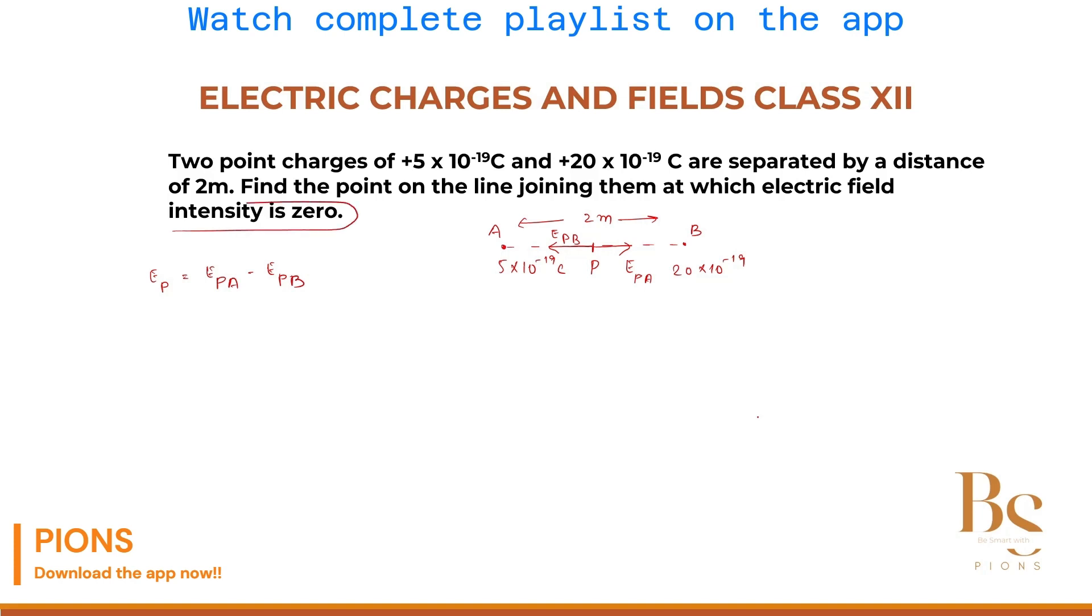Electric field at point P due to A minus electric field at point P due to B. Now what is electric field at point P as per the question? Zero. It is zero. If it is zero, let's put it zero here. Let's take EPB on the left hand side. So EPB must be equal to EPA.